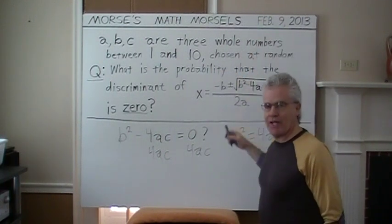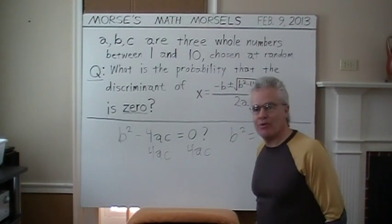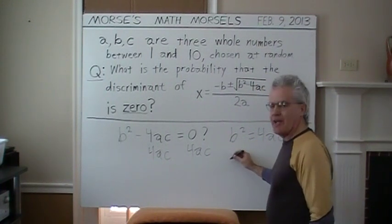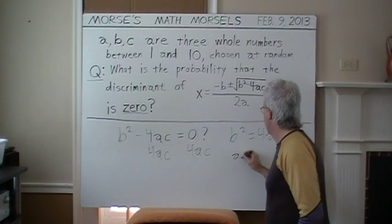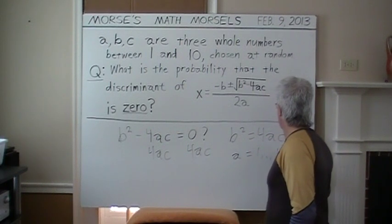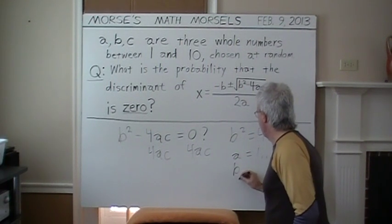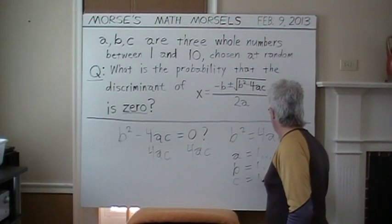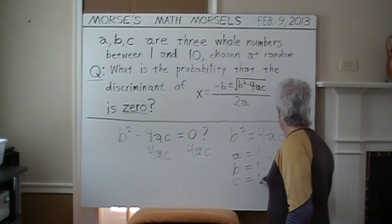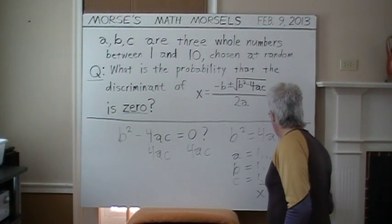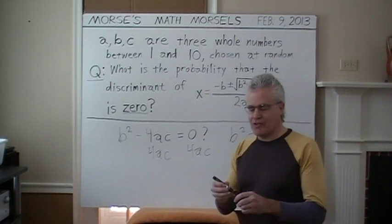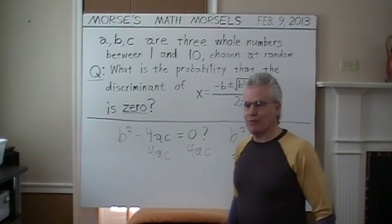Now, as for the random values of A, B, and C between 1 and 10 each, A could be any of 1 through 10, and the same for B and the same for C. There are a total of 1,000 possible arrangements for A, B, and C, 1 through 10.